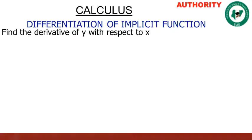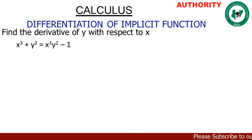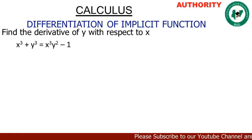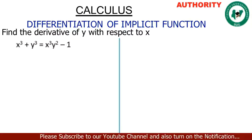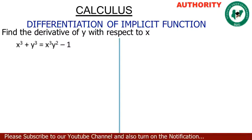Let's take this question: find the derivative of x³ + y³ = s³y² - 1. We are asked to differentiate this function with respect to x. This is an implicit function, so let's see how we're going to do it. We'll be differentiating this function with respect to x.